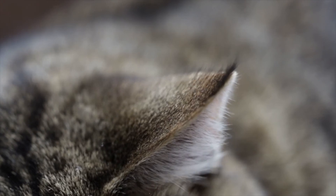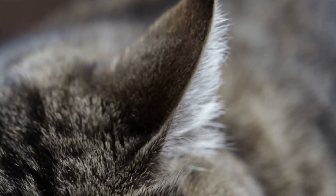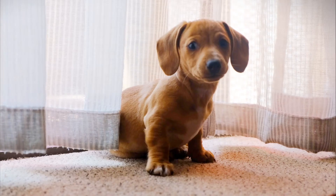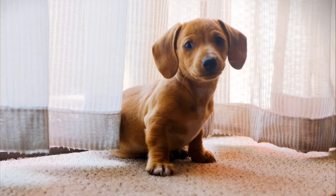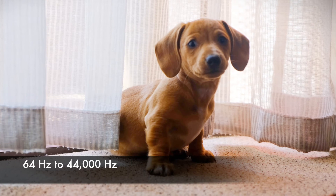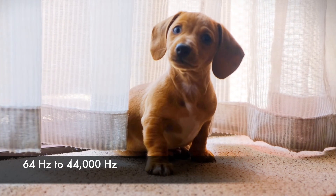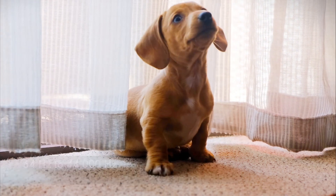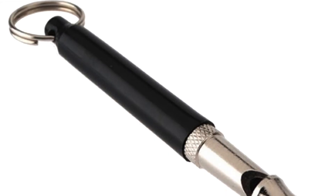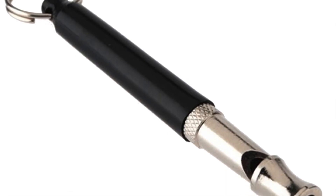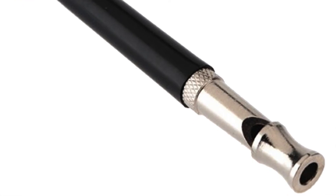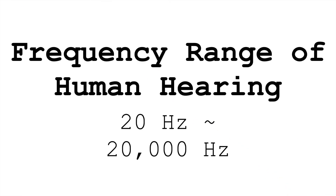Outside of humans, different animal ears hear differently too — with dogs, for example, hearing from 64 hertz to 44,000 hertz, depending on breed. This is why we can make dog whistles that humans can't hear, because they're above the 20,000 hertz threshold of our hearing, but not above the 44,000 hertz threshold of a dog's hearing.